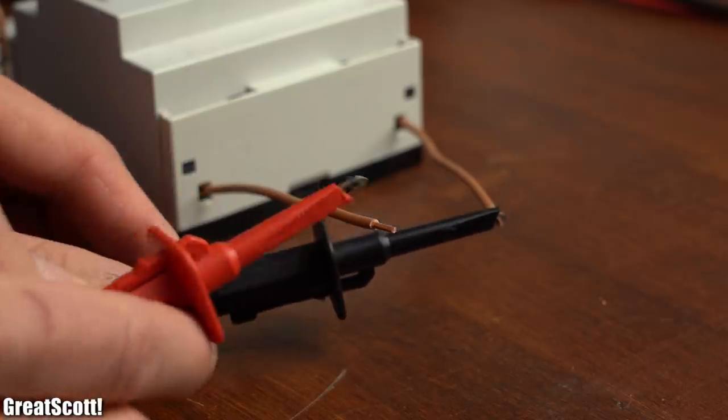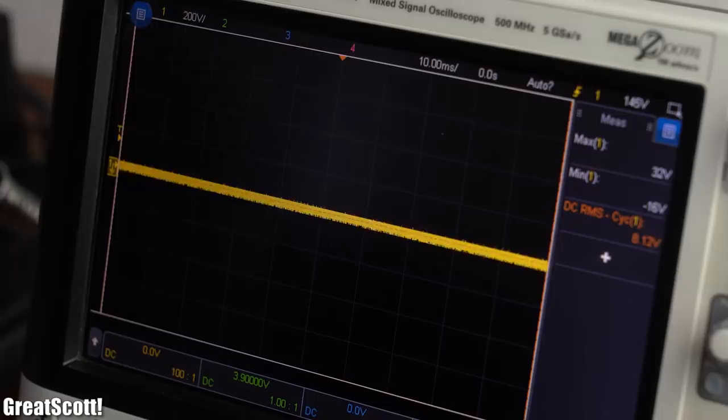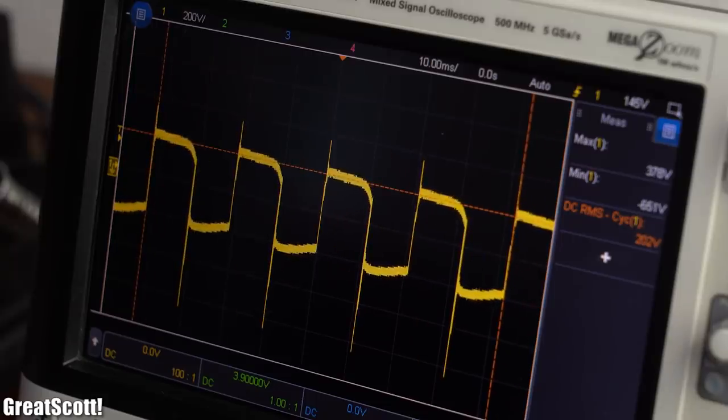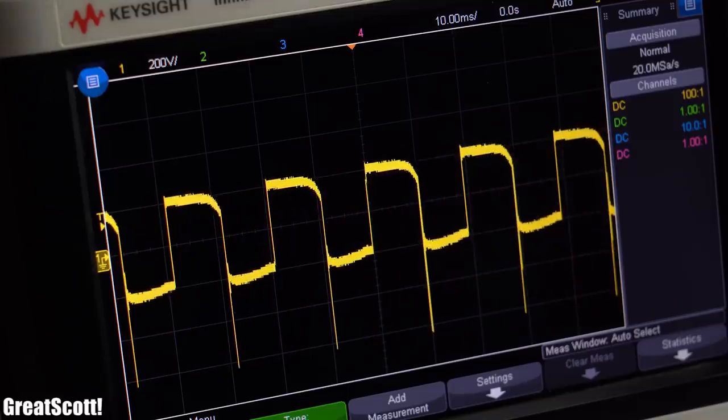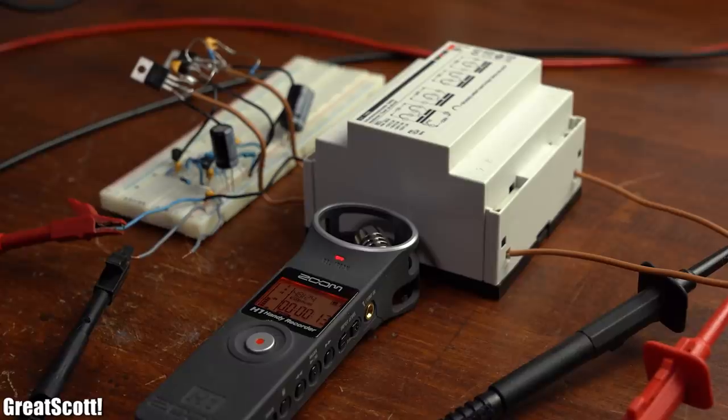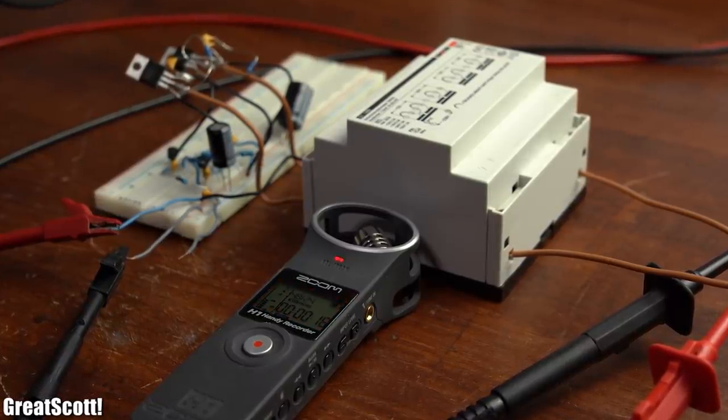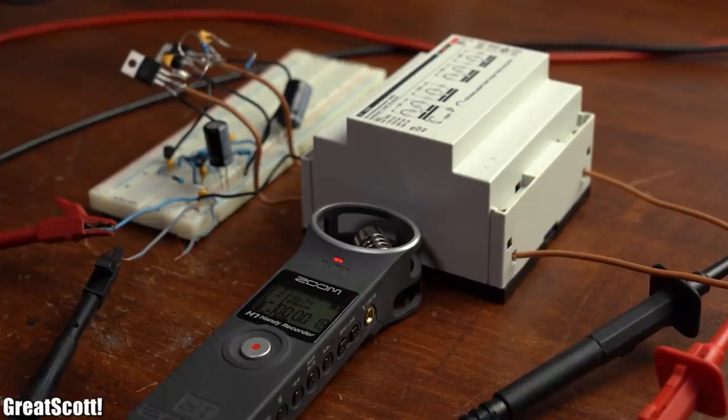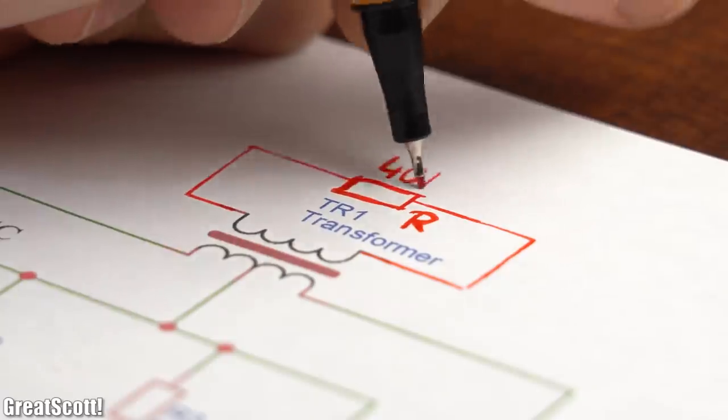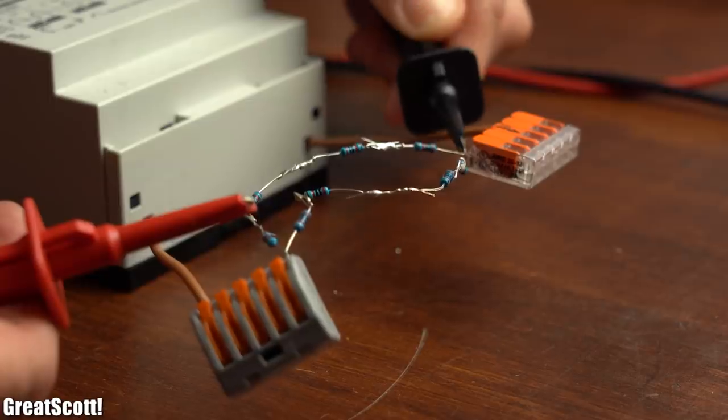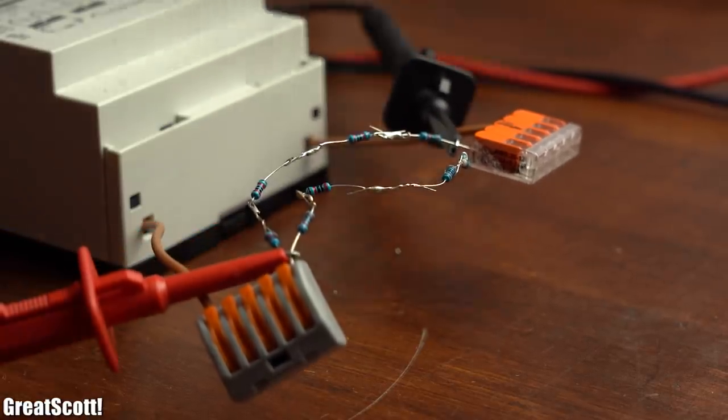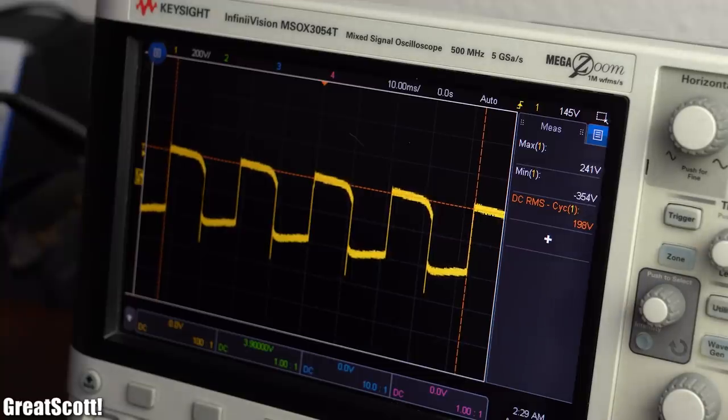But if we have a closer look at the output voltage of the transformer, then we can also observe spikes with values of around 650V that have the potential to kill your appliances. The reason for this ringing is the utilized sharp square wave voltage, which by the way you can hear way more through the transformer in comparison to for example a sinusoidal waveform. To get rid of this problem, we would have to attach a constant load to the output, for which I chose a 40kΩ resistor network. As you can see, it reduced the voltage peaks to values of around 350V.